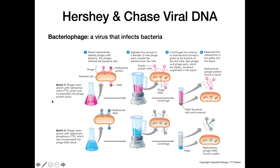First, in the protein-based experiment, they incorporated a radioactive form of sulfur — an important component of proteins — into the protein coats of these viruses. They allowed the viruses to infect bacterial cells, then put them in a blender to get the empty protein shells to fall off the surface of the bacteria. They centrifuged the mixture to get a pellet of bacterial cells and a supernatant of everything outside the cells. The radioactivity was found in the supernatant, telling them that the proteins stayed outside the bacterial cells and were not responsible for causing infection.